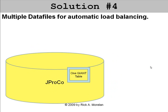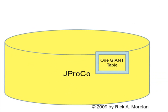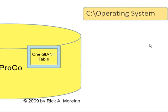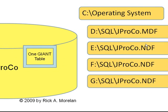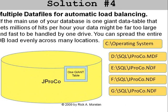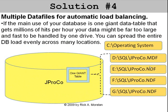What about multiple data files for automatic load balancing? That's great if you've split up a bunch of tables, but what if 99% of your activity is in one giant transaction table that would overwhelm the throughput of any given drive? How can you split one giant table across many data files? The reality is you can only assign a table or any object to one file group. But fortunately, you can associate a file group with as many data files as you need. That's what we're getting ready to talk about.